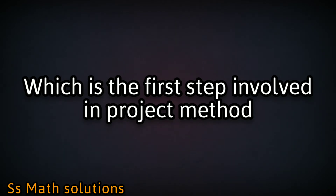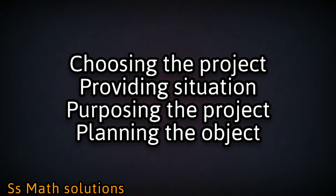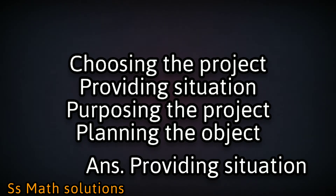Which is the first step involved in project method? Options: choosing the project, providing situation, purposing the project, planning of the project. The answer is providing situation — the first step in the project method is providing situation.